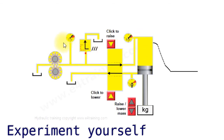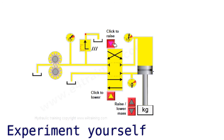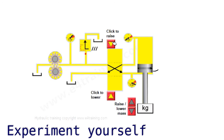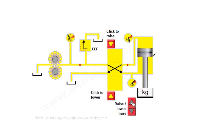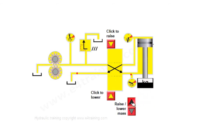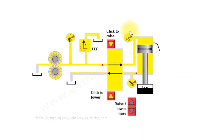To review: we've got our reservoir, our pump supplying the flow, gauges to tell us the pressure and what's happening inside the system. We've got our safety relief valve, our directional valve controlling the direction of flow, and our cylinder which raises and lowers the load.